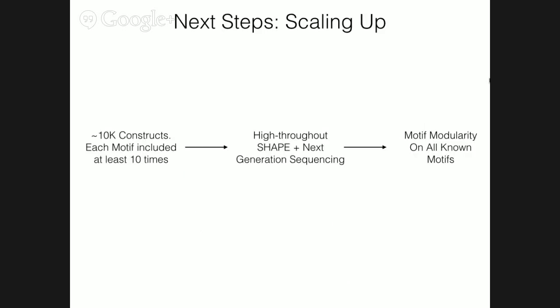I think in the future, especially when we expand this out to all the motifs, solving these types of problems — like this HCM sensor — will be much easier to do. What I showed you was testing only 16 of these constructs, but I actually have hundreds of thousands of these. What I've done is prepare a library of about 10,000 constructs that nicely sample all known two-way junctions at least 10 times. We're going to use high throughput SHAPE and next generation sequencing to get the modularity score for all known two-way junctions, and I'm actually piloting this experiment right now in the current Eterna round.